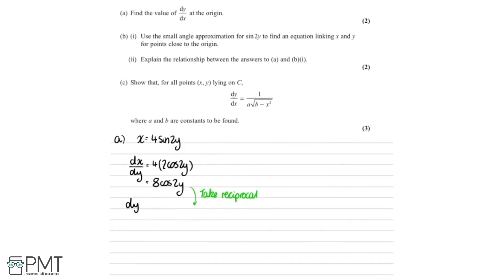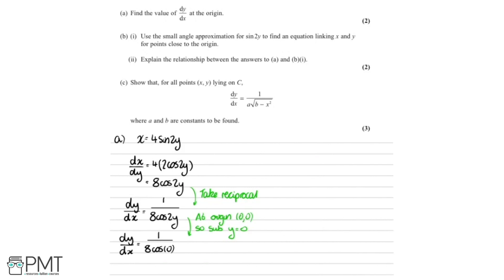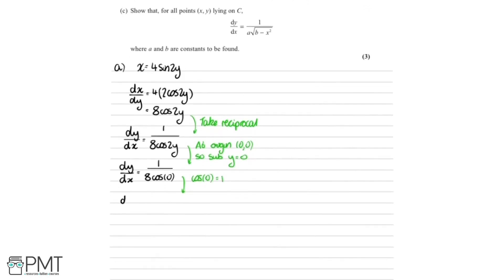Taking the reciprocal, we get dy by dx on the left-hand side, and it's going to be 1 over everything — so 1 over 8 cos 2y on the right-hand side. Now we need to find the value of dy by dx at the origin, which is (0, 0), so x equals 0 and y equals 0. Substituting y equals 0, we get dy by dx equals 1 over 8 cos 0. Since cos 0 equals 1, the value of dy by dx at the origin equals 1 over 8.